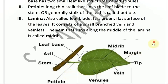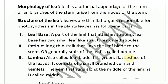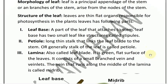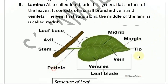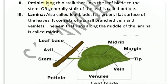Second part is the petiole. Petiole is a long thin stock that links the leaf blade to the stem. The leaf blade and the stem are connected by the petiole. Generally, the stock of the leaf is called petiole.